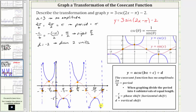The blue graph is our final graph of the given cosecant function. I hope you found this helpful.